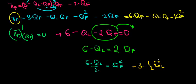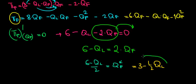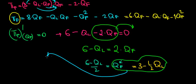So for every additional unit the leader puts on the market, the follower reduces its quantity by a half. The leader — as first mover — can capture a bigger market share, and the follower takes this into account, knowing there won't be as much room for him. That's what this best response function shows. With this in mind, we'll calculate the leader's quantity next, which we'll do in the next video.